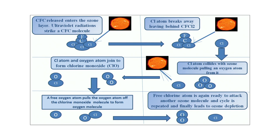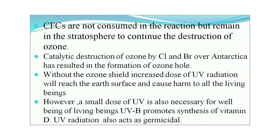This free chlorine atom collides with an ozone molecule, pulling an oxygen atom from it. The chlorine atom and oxygen atom join to form chlorine monoxide. A free oxygen atom then pulls the oxygen atom from the chlorine monoxide molecule to form an oxygen molecule, and the free chlorine atom is again ready to attack another ozone molecule. This cycle is repeated, leading to ozone depletion. CFCs are not consumed in the reaction but remain in the stratosphere continuing ozone destruction. This catalytic destruction of ozone by chlorine and bromine over Antarctica has resulted in formation of the ozone hole.